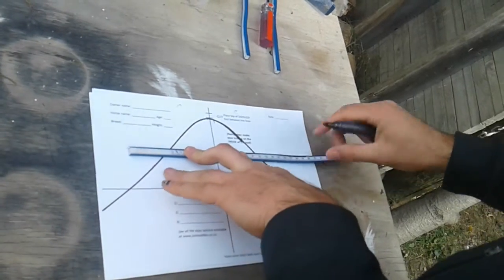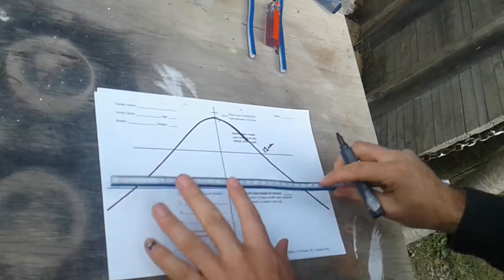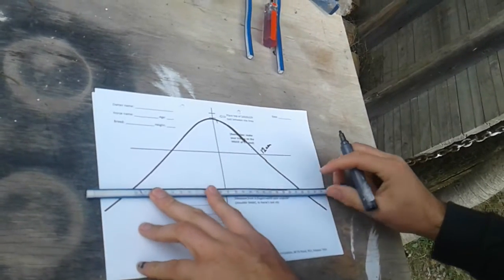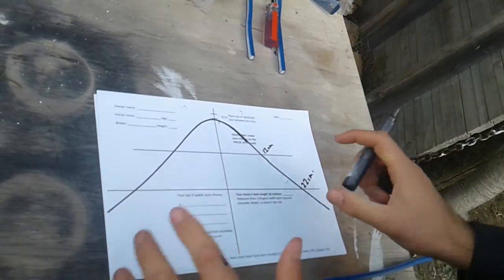Now, just going to measure here so you can see that FANTAS is 12 centimetres here. Note that down. And 22 centimetres here. Note that down. Just get used to doing that.